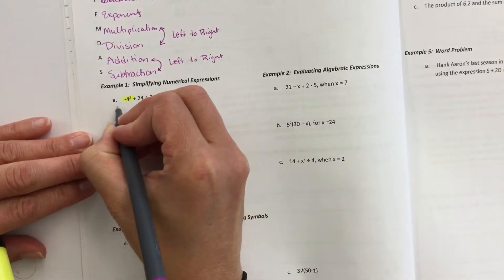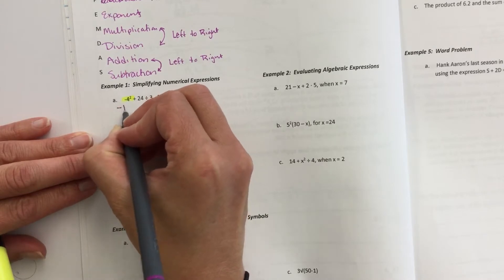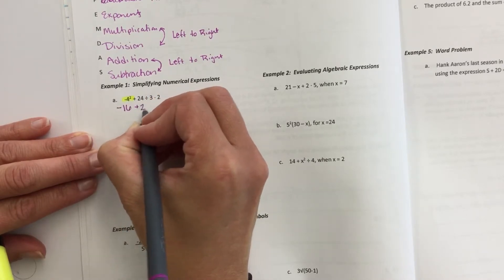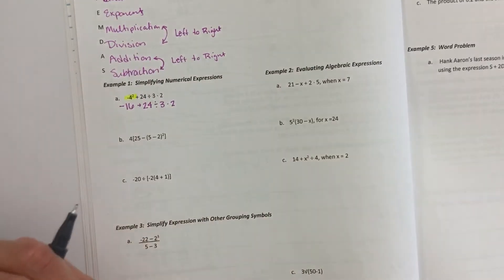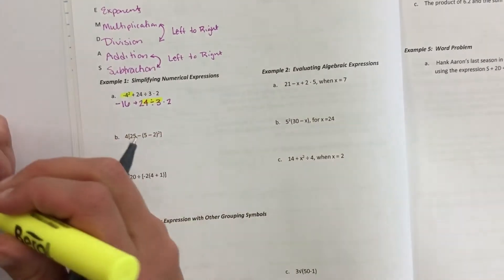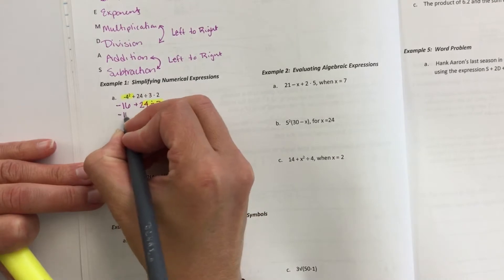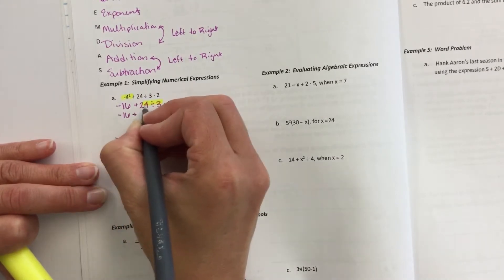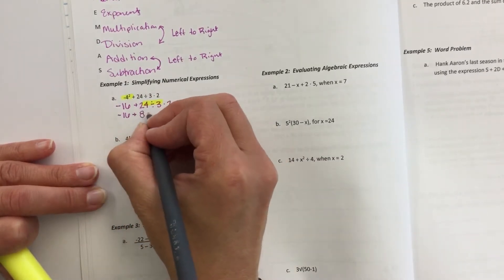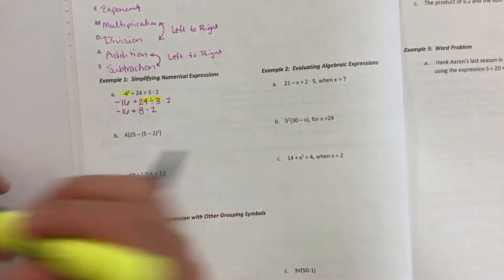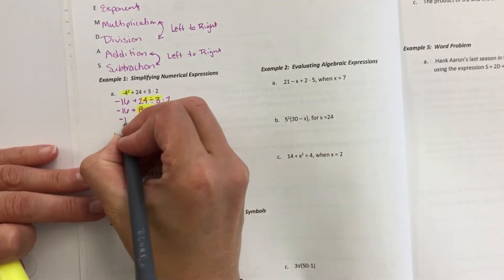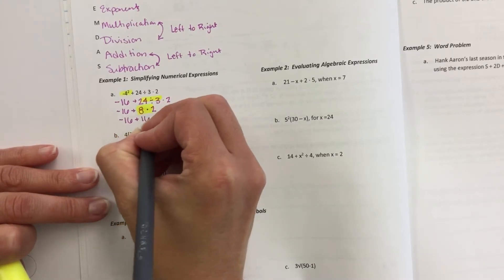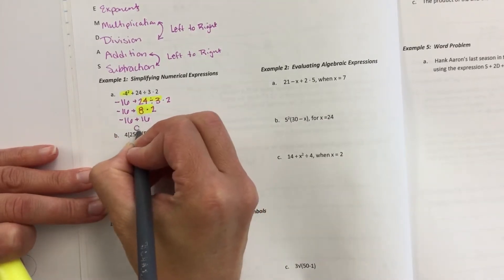Okay, so anyways, we're going to do exponents first. So this would be a negative, it's not in the parentheses, 4 times 4 is 16. I'm the one that likes to re-write the whole problem. Then I'm going to do division. So negative 16 plus 24 divided by 3 is 8. And then we need to multiply before adding. Negative 16 plus 16. And our final answer is 0.